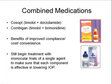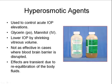We also have combined medications on the market now. These include Cosopt and Combigan. Cosopt is a combination of Timolol and Dorzolamide. Combigan is a combination of Timolol and Brimonidine. The benefits of these drugs are basically improved compliance, sometimes an improvement in cost and convenience to the patient. But typically, you generally don't start with a double agent like this. You usually still begin treatment with single agents, using monocular trials to make sure that each medication is effective in lowering IOP. Once patients are on two of these medications, frequently the combination drops are used.